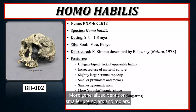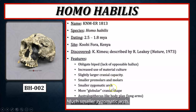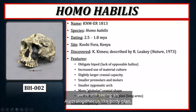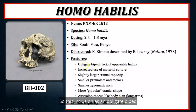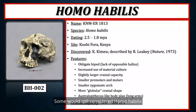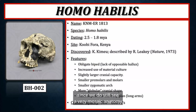Other features include more generalized dentition with smaller premolars and molars, a much smaller zygomatic arch, and a more rounded globular cranial shape. From the neck down, we're still seeing an Australopithecus-like body plan, so the classification of Homo habilis as an obligate biped is debated. Some would still consider Homo habilis more of a habitual biped given the mosaic anatomy below the neck.